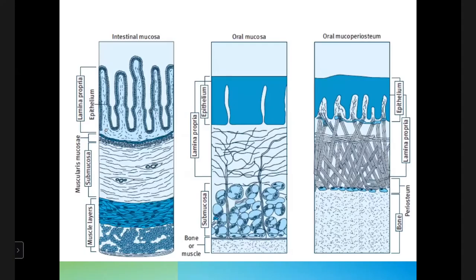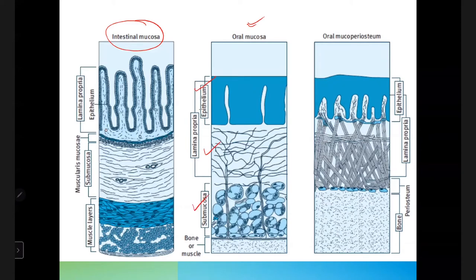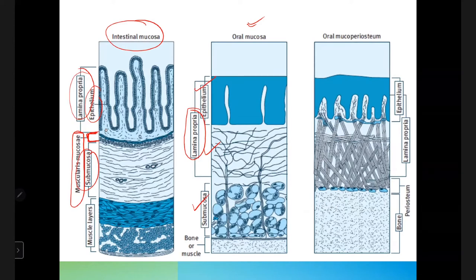An important difference between oral mucosa and intestinal mucosa: both have epithelium, lamina propria, and submucosa, but the intestinal mucosa has an additional layer called muscularis mucosa — containing smooth muscle and elastic fibers — which is absent in oral mucosa.